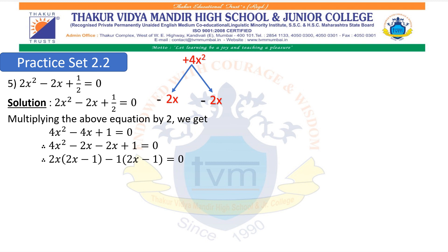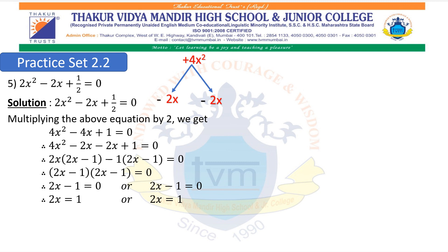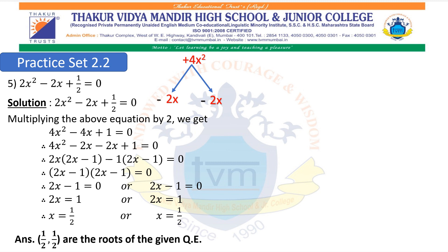Both brackets are common, giving: 2x minus 1 into 2x minus 1 equals to 0. Either bracket equals to 0 gives: 2x minus 1 equals to 0 or 2x minus 1 equals to 0. From both equations, shifting minus 1 to the right hand side gives 2x equals to 1. Then 2 is shifted to the right hand side, giving x equals to 1 upon 2. Therefore, 1 upon 2 is the root of the given quadratic equation (repeated root).